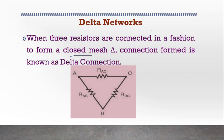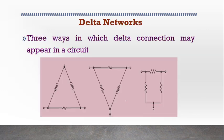The resistance in between A and C can be written as RAC and between A and B, it is called RAB and this is called RBC. These are the different ways of connecting a delta circuit.